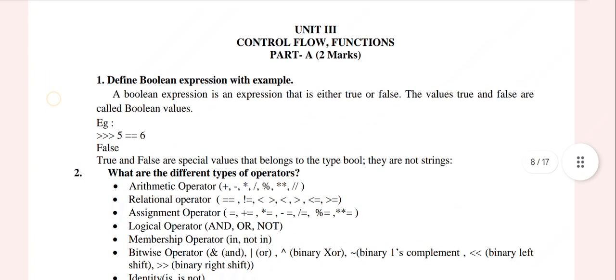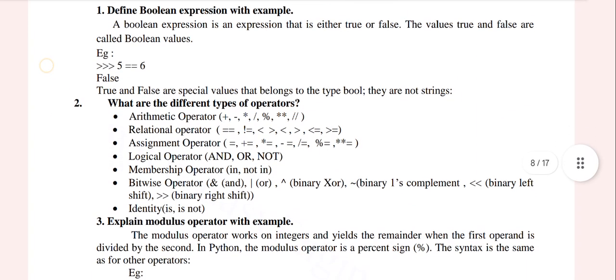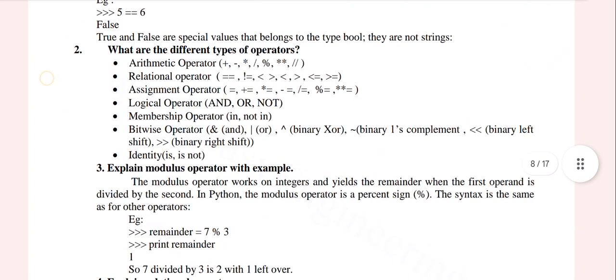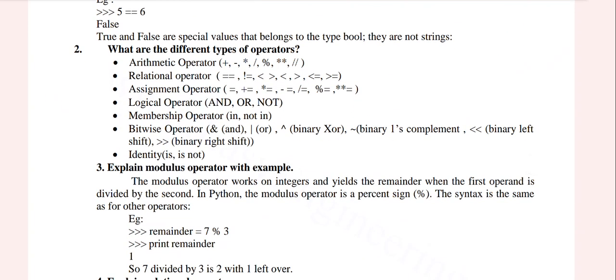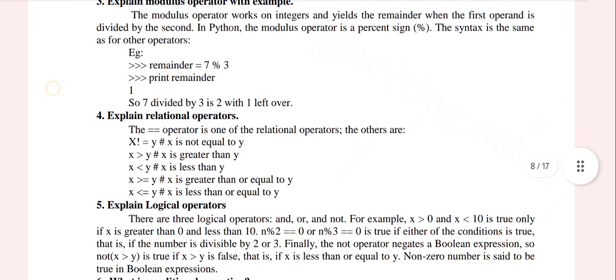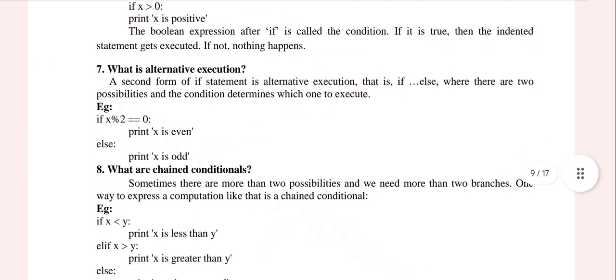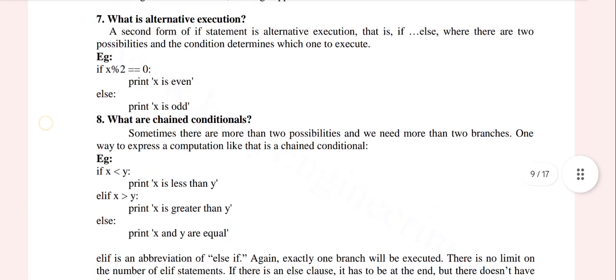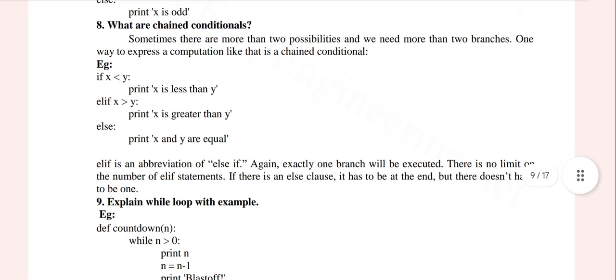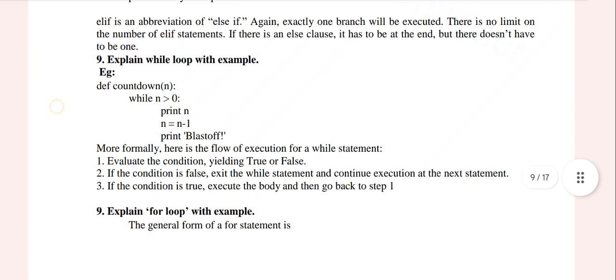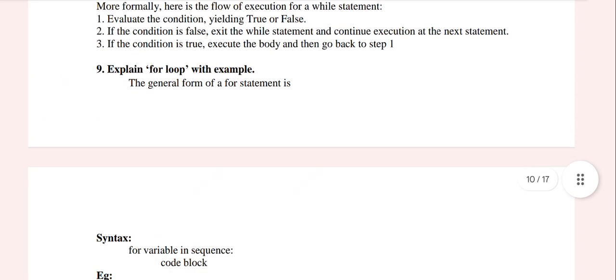Unit 3 is control flow. This is a very important boolean topic. Unit 2 and Unit 3 are very important. Define boolean expression with an example — very important. What are the different types of operators? Explain relational operators. What is a conditional expression? What are the chained conditionals? This is a very important question.